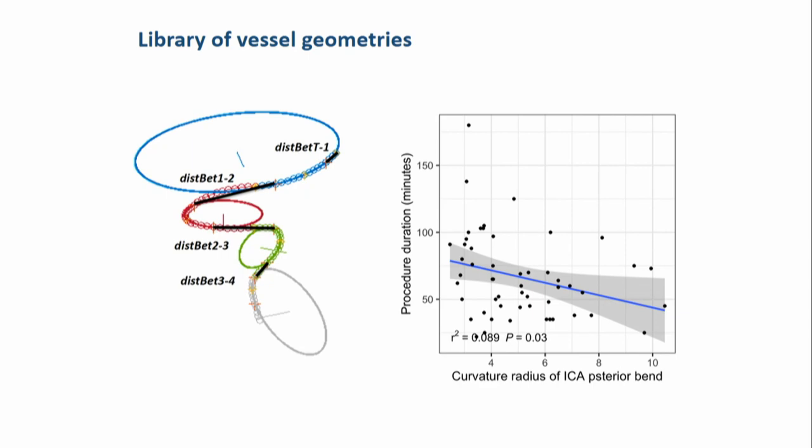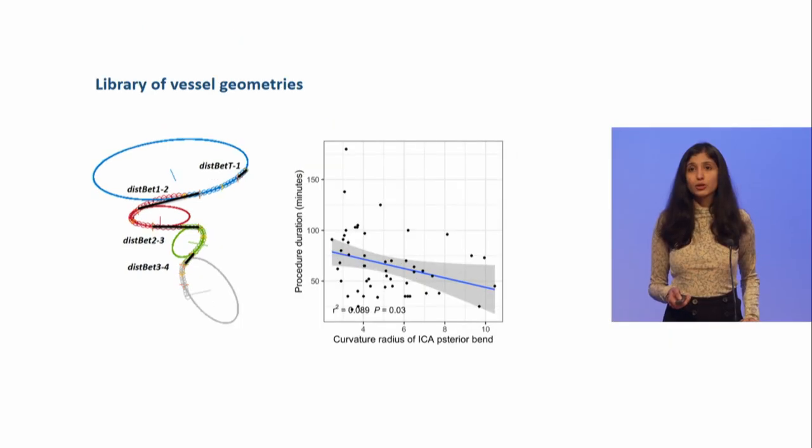We also found that the curvature of the ICA, or a segment of the ICA, is associated with a longer procedure. These associations are crucial for validating the findings from work package 4, which involves the in-silicon modeling of thrombectomy procedures, which is more dependent on local geometry characteristics.